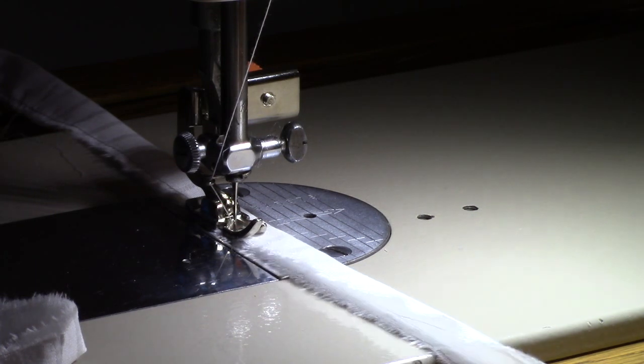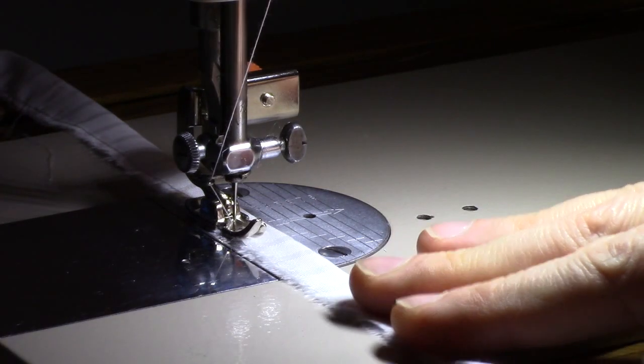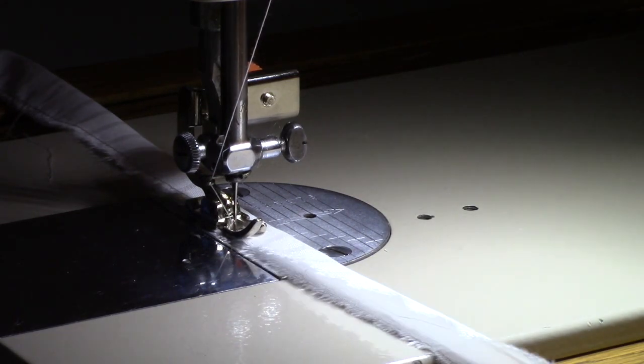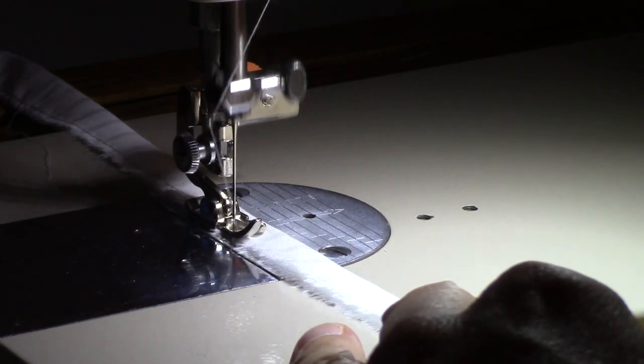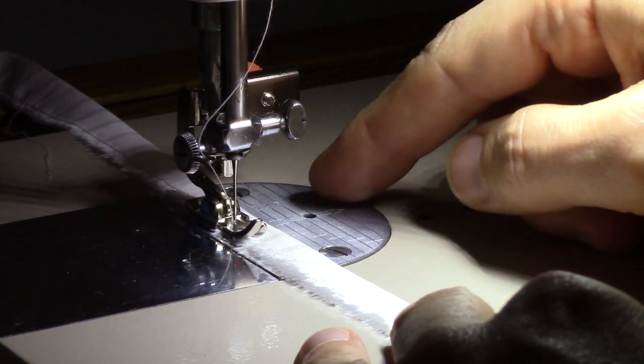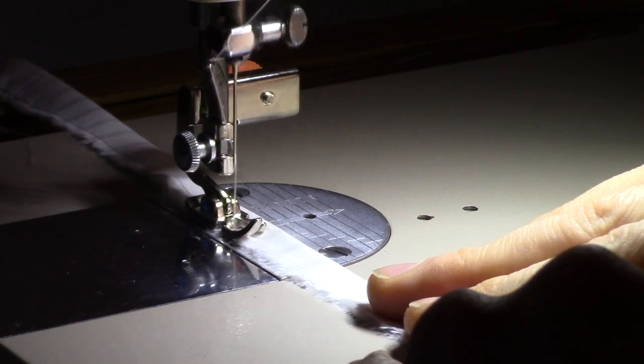One of the big complaints about a lot of the vintage Japanese sewing machines is that they're left position only. Now, if you use this particular straight stitch foot which is in fact a zipper foot, and I will show you all the details, you will never even notice the difference.